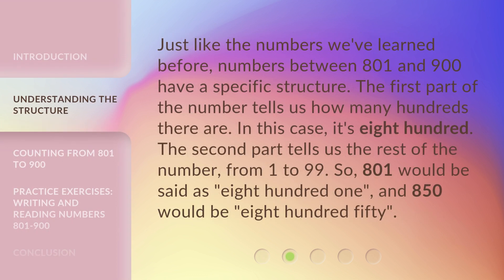Just like the numbers we've learned before, numbers between 801 and 900 have a specific structure. The first part of the number tells us how many hundreds there are. In this case, it's 800. The second part tells us the rest of the number, from 1 to 99. So, 801 would be said as eight hundred one, and 850 would be eight hundred fifty.